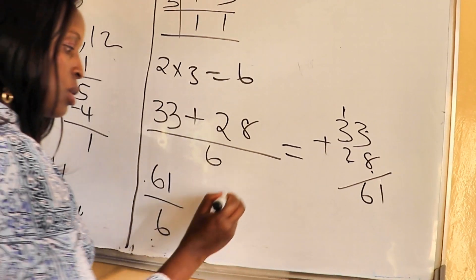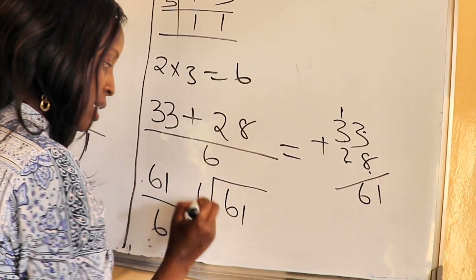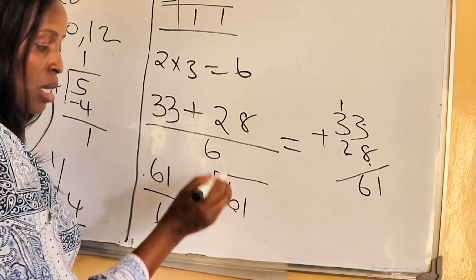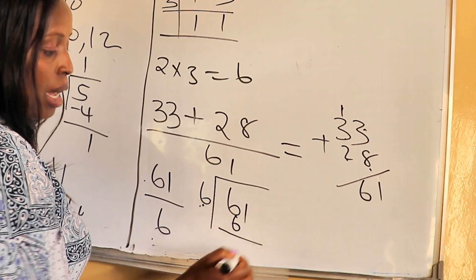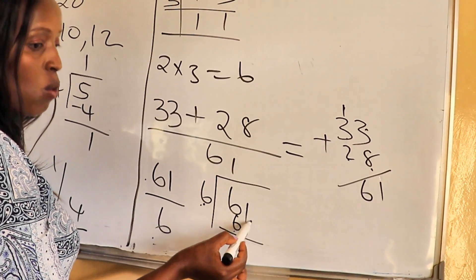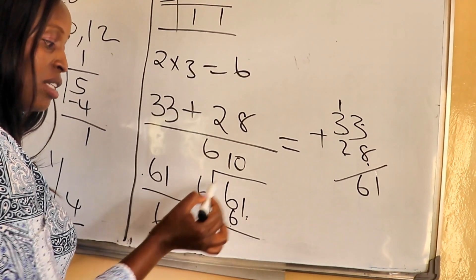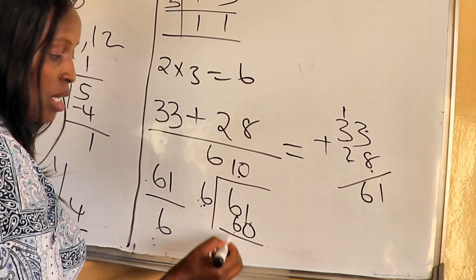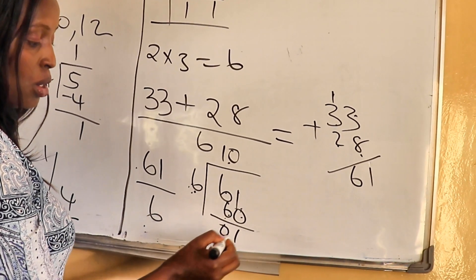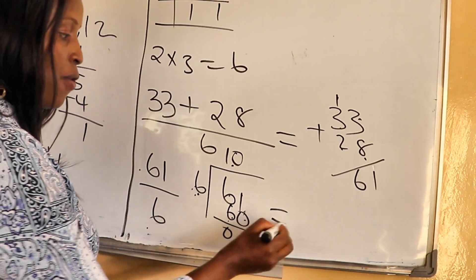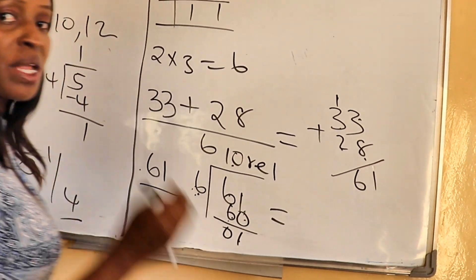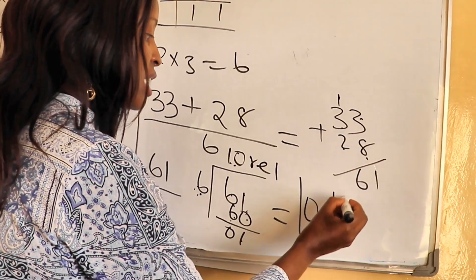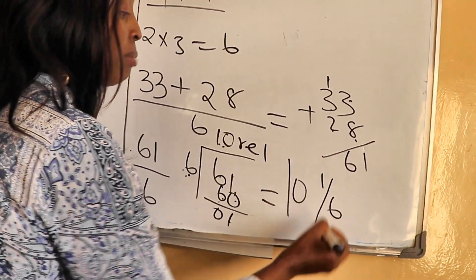The next step is to simplify sixty-one over six. We divide the numerator by the denominator: sixty-one divided by six. Six goes into sixty ten times, giving sixty. Sixty-one minus sixty is one remainder, and six minus six is zero. So our quotient is ten and our remainder is one. The quotient becomes the whole number and the remainder takes the fraction part, keeping the same denominator — giving a final answer of ten and one-sixth.